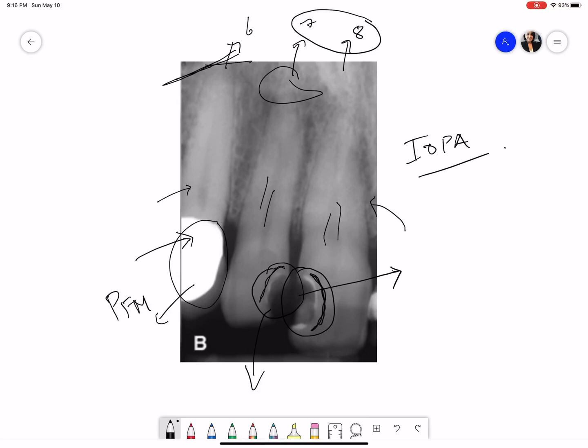So this is how I would interpret an intraoral periapical radiograph. As you saw, I went step by step and that's the way you interpret it. I hope that helped. Thank you.